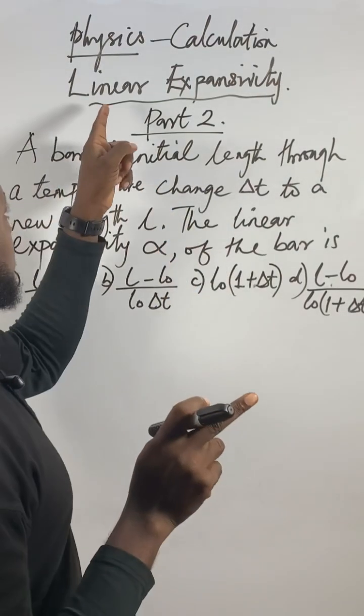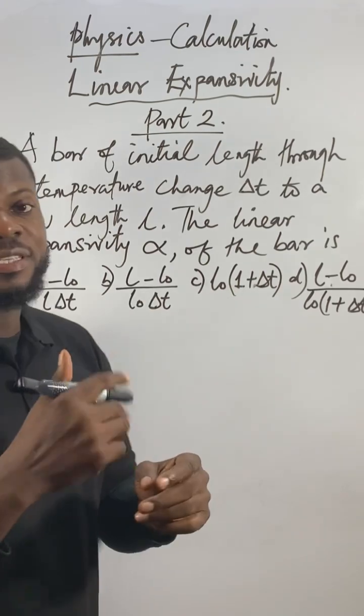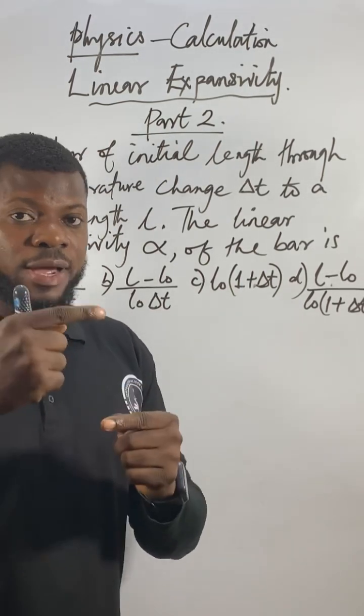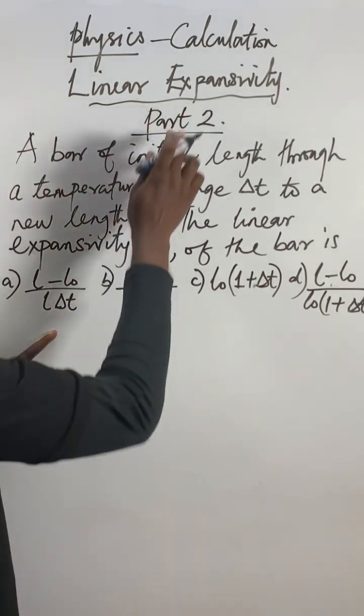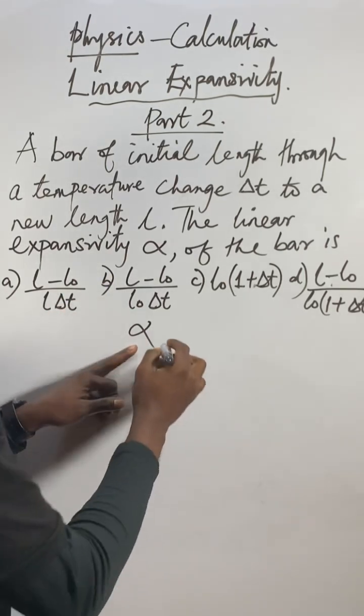In part one I taught you about linear expansivity. I explained everything. Linear expansivity is the increase in length per unit length per degree rise in temperature. I also gave you the formula for this linear expansivity with the symbol alpha.